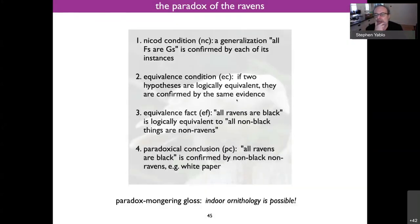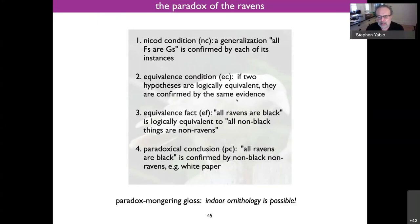Paradox of the Ravens. Nicod condition: a generalization 'All Fs are Gs' is confirmed by each of its instances. Equivalence condition: if two hypotheses are logically equivalent, they're confirmed by the same evidence. Equivalence fact: 'All ravens are black' is logically equivalent to 'All non-black things are non-ravens.' Paradoxical conclusion: 'All ravens are black' is confirmed by non-black non-ravens — e.g., a white piece of paper — because of the logical equivalence plus the Nicod condition. The paradox-mongering gloss is that indoor ornithology is possible.